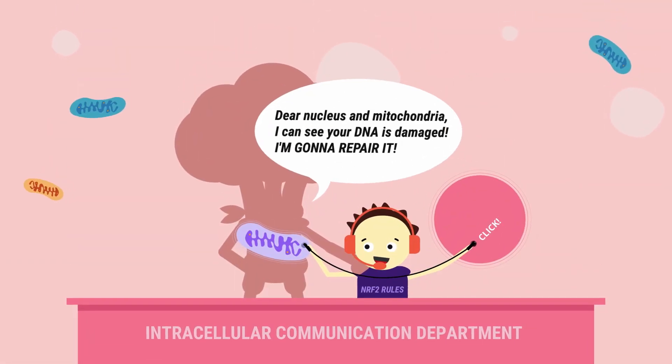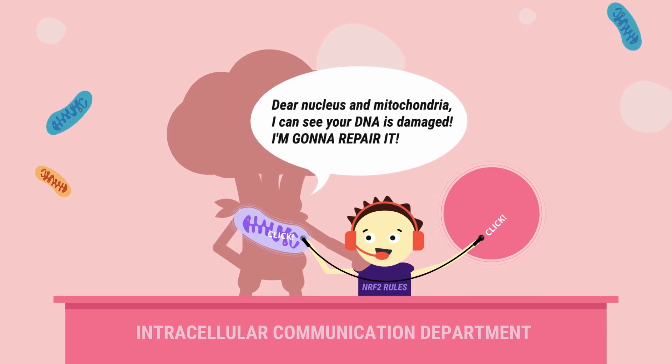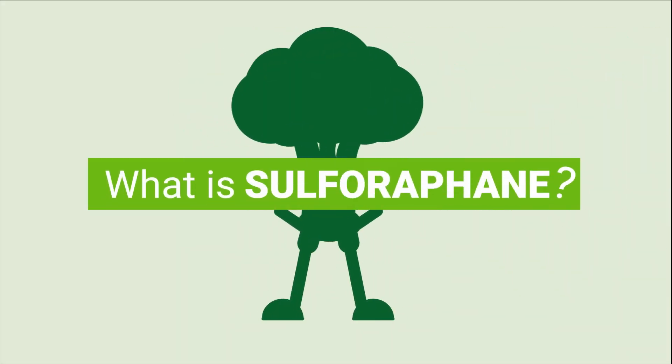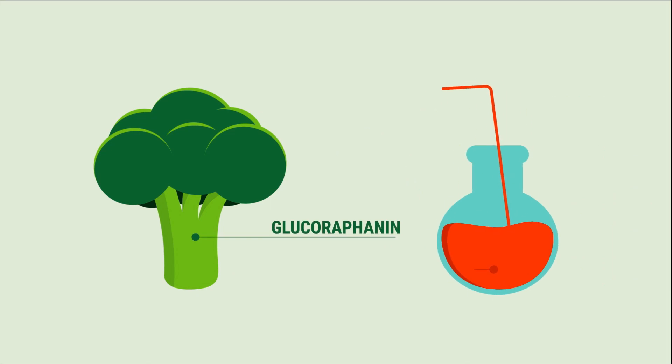Sulforaphane is by far the best natural way to activate NRF2. Sulforaphane is a bioactive compound occurring in broccoli in a stored form as glucoraphanin.